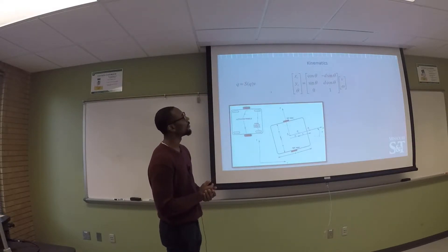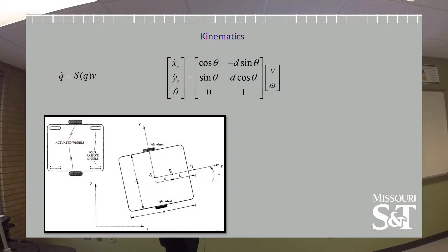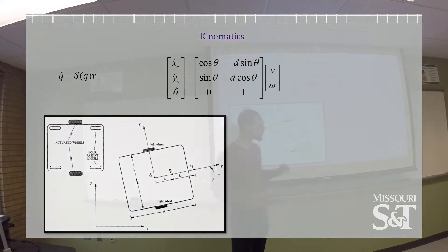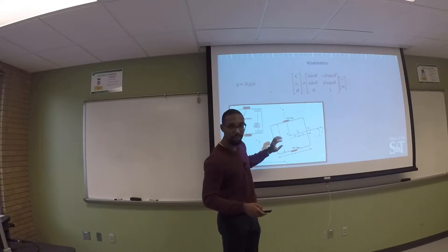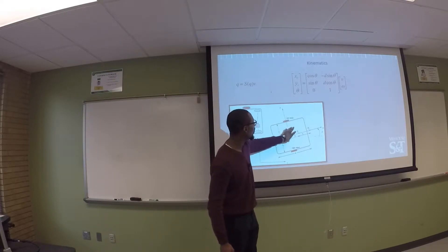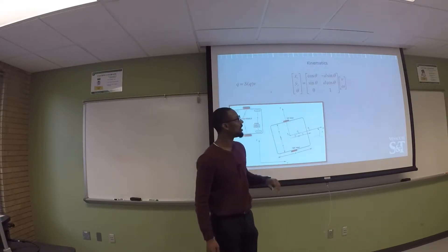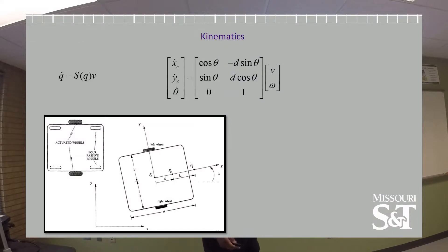The kinematics of the differential drive robot are shown here. We have the linear velocity of the robot along the x-axis, and the angular velocity of the robot omega around the robot's z-axis. These are related to the Cartesian coordinates — the velocity in the x-direction, y-direction, and z-direction of the world frame — by this Jacobian matrix.